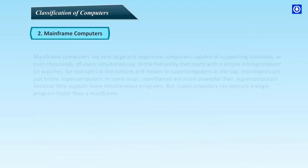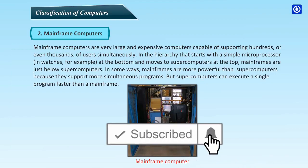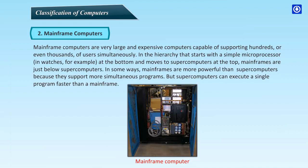Mainframe computers are very large and expensive computers capable of supporting hundreds or even thousands of users simultaneously. In the hierarchy that starts with a simple microprocessor at the bottom and moves to supercomputers at the top, mainframes are just below supercomputers. In some ways, mainframes are more powerful than supercomputers because they support more simultaneous programs, but supercomputers can execute a single program faster than a mainframe.